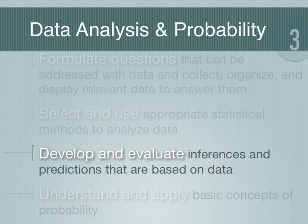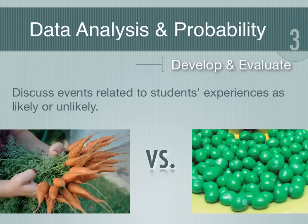The third standard for data analysis and probability is being able to make predictions based on your data. So if you went around the classroom and said, what would you prefer, a carrot or an M&M, and you asked 10 kids, nine of them said M&Ms, and one kid said I want a carrot. All right, let's ask, not what do you want, but what do you think the next student is going to pick? Nine people picked M&Ms, one person picked a carrot.